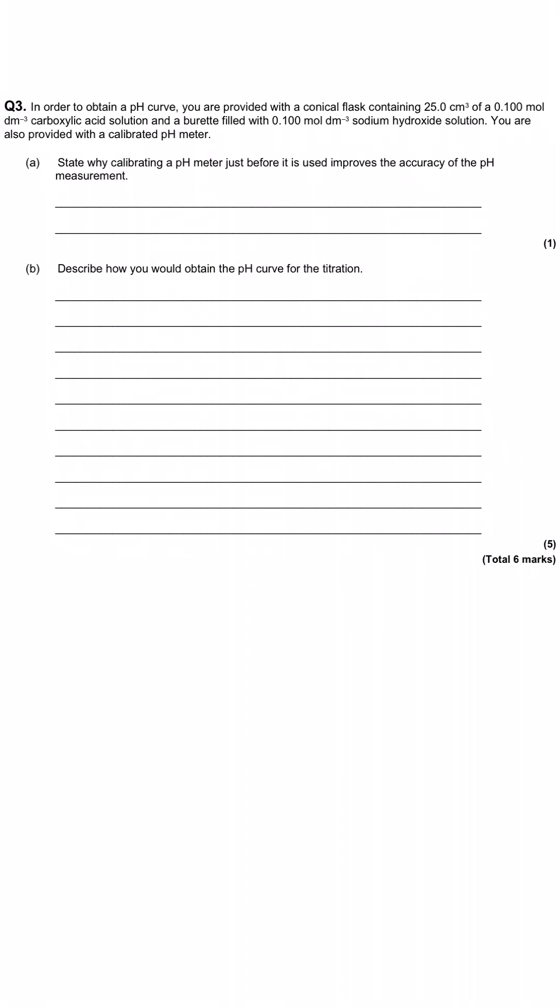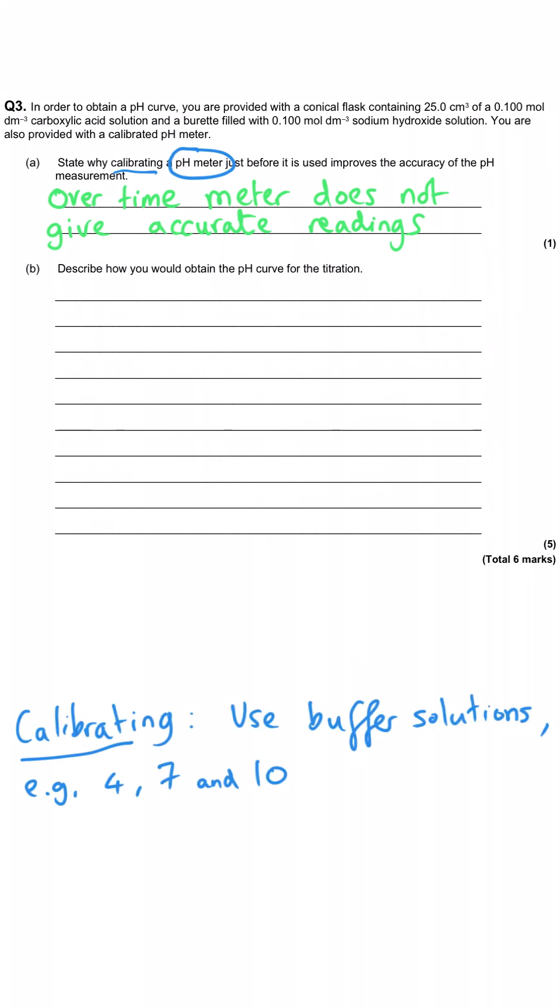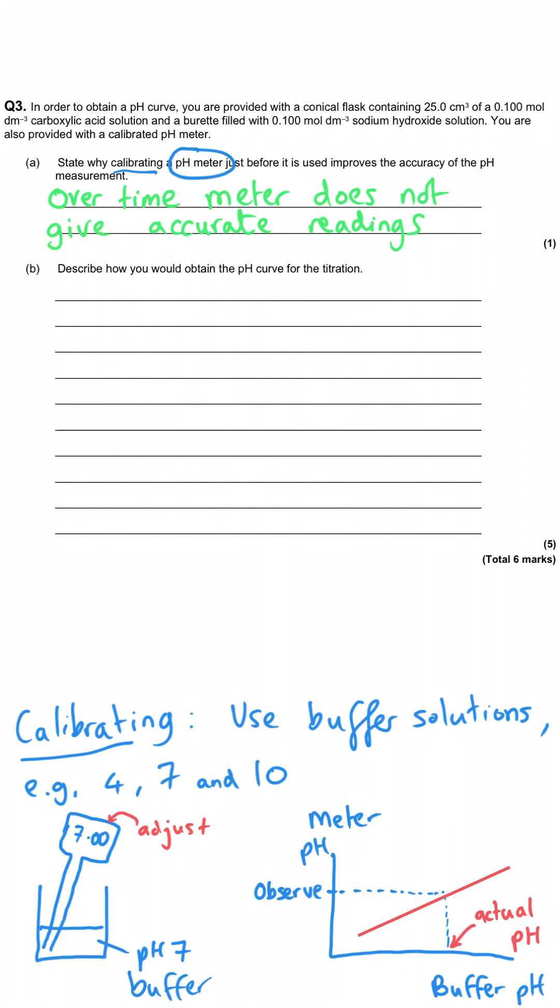This final question takes a slightly different approach, because it is asking us how we actually generate the pH curves that we've been looking at for the previous two questions. So first up, it tells us that you need to use a pH meter to generate this curve. And it asks us to explain why calibrating that pH meter is really important to improve the accuracy of the pH measurement. And quite simply, pH meters get less accurate over time. And so what you end up having to do is calibrate them either by putting them into a buffer solution, then adjusting the pH reading on the actual meter, maybe with a screwdriver or something like that, or you plot a calibration curve where you again use three buffer solutions or more, and you just use that to adjust any pH meter readings that get displayed when you're actually doing the readings yourself. But that's not what's being asked about here, but that question is sometimes asked.